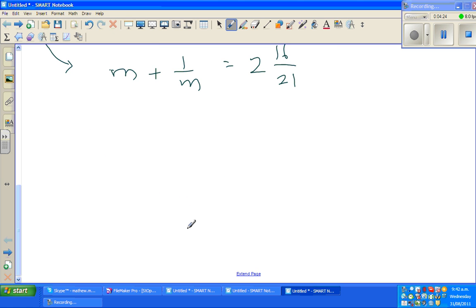I want to do as much as possible without the calculator. So this can be written as m squared over m. I'm multiplying both the numerator and denominator with m, plus 1 over m is equal to, so you have to multiply this, so that is 21 times 2 is 42 plus 16.